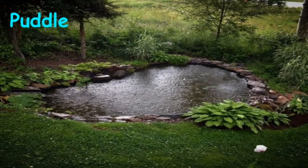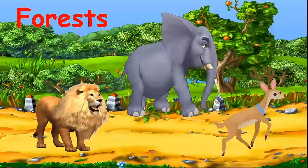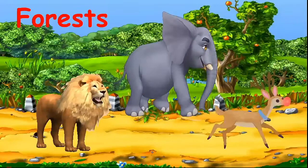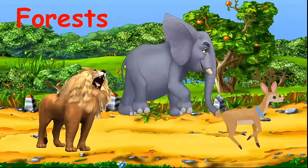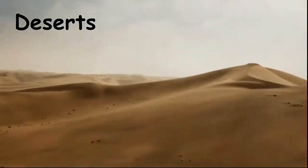Next, terrestrial ecosystem. Ecosystems outside the water body and on land are called terrestrial ecosystems. Examples of terrestrial ecosystem include forests, mountain regions and deserts.